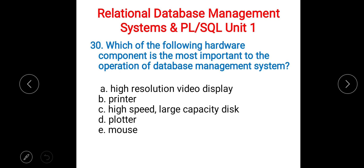Last question: which hardware component is most important to the operation of a database management system? A) high-resolution video display, B) printer, C) high-speed large-capacity disk, D) plotter, E) mouse. The correct answer is C) high-speed large-capacity disk.